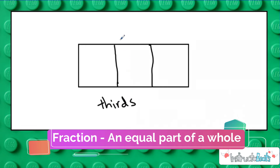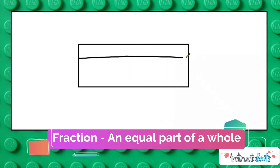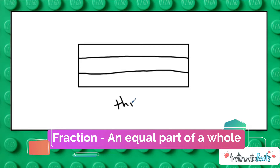Now it doesn't matter if we split this whole up and down or side to side. If I took this candy bar and split it this way into three equal parts, I still have made thirds, because I split it into three equal parts or three equal regions, and each part is exactly the same size.